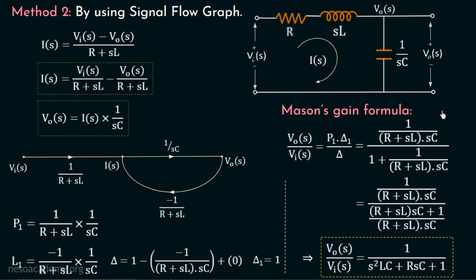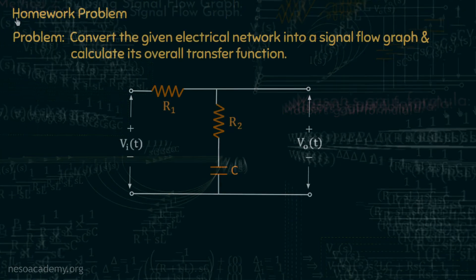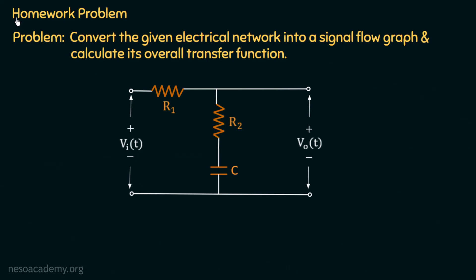I hope you are now getting the process of converting a network into its equivalent signal flow graph — that is, the modeling of an electrical network. In the upcoming lectures, we will discuss more complicated networks and try to model them into their equivalent signal flow graphs. I want you all to go through this lecture one more time, and after that I will give you one homework problem. Try this problem on your own and let me know in the comment section.